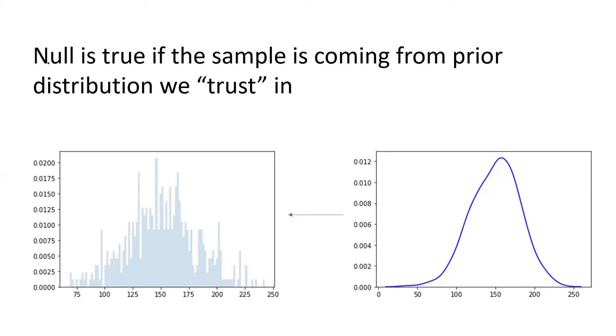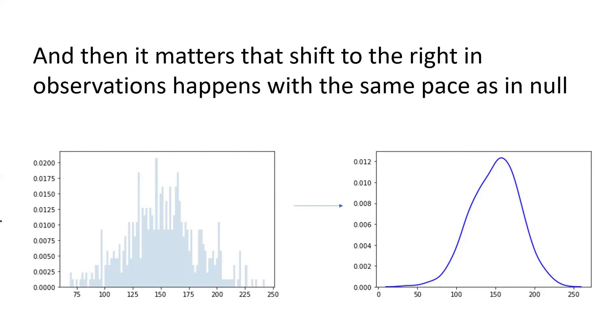And the key thing here is to understand what does this phrase mean that null is true. And null hypothesis is true if the sample is coming from the prior distribution we trust in. So as I told you that I'm having a prior belief about the skyscrapers in New York City based on prior information of the skyscrapers in the USA. And if it is so, if we truly have like the same distribution of skyscrapers in New York as in the whole United States, then the null is true. This is what it means in fact. But if it is so, and null is true, then it matters how we're making these calculations and how we're making this shift. And it is important just to have these shifts to the right, as I have been showing to you in terms of observations, like here, to be done with the same pace as in case of the null distribution.